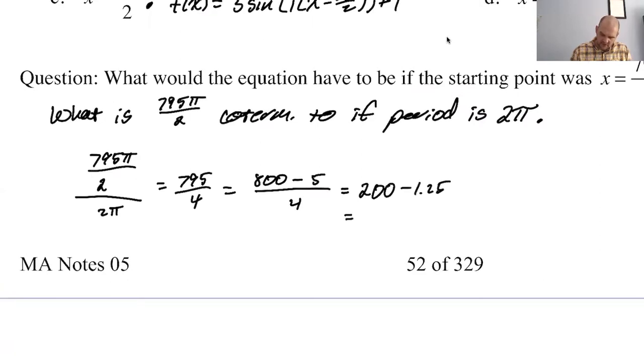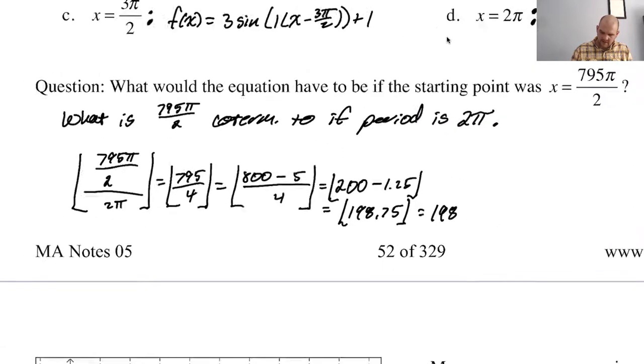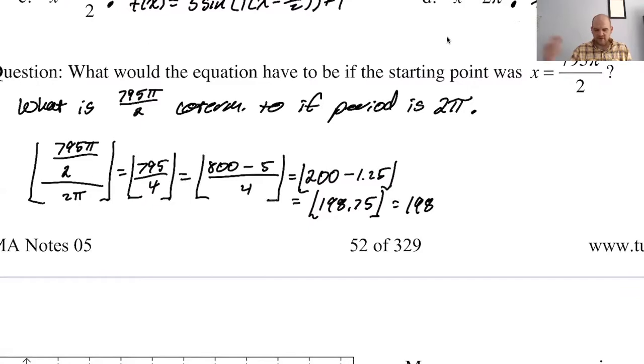So 200. So one, 198.75. But the key thing here is I need the floor of this floor. So, when you don't know what you're doing, just stumble around until it makes sense to you. Floor. And then the floor of that is 198. Okay. But really, I just know that it's 198.75 rotations.